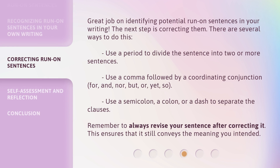Great job on identifying potential run-on sentences in your writing. The next step is correcting them. There are several ways to do this: use a period to divide the sentence into two or more sentences; use a comma followed by a coordinating conjunction — for, and, nor, but, or, yet, so; or use a semicolon, a colon, or a dash to separate the clauses. Remember to always revise your sentence after correcting it — this ensures that it still conveys the meaning you intended.